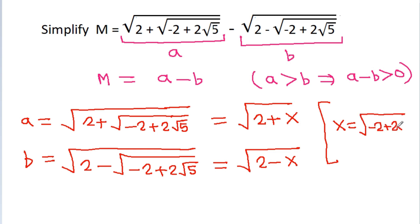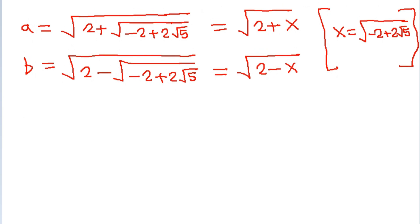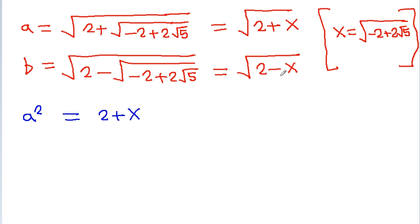Let x = √(-2 + 2√5), so a = √(2 + x) and b = √(2 - x). Therefore, a² = 2 + x and b² = 2 - x.